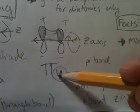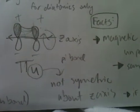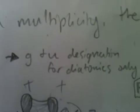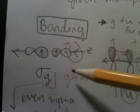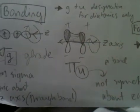So, these are un-Gerard, and they are not symmetric about the z-axis. And these two designations of Gerard and un-Gerard are only for diatomics. So, again, top half matches the bottom half. G, Gerard, they don't match, un-Gerard.